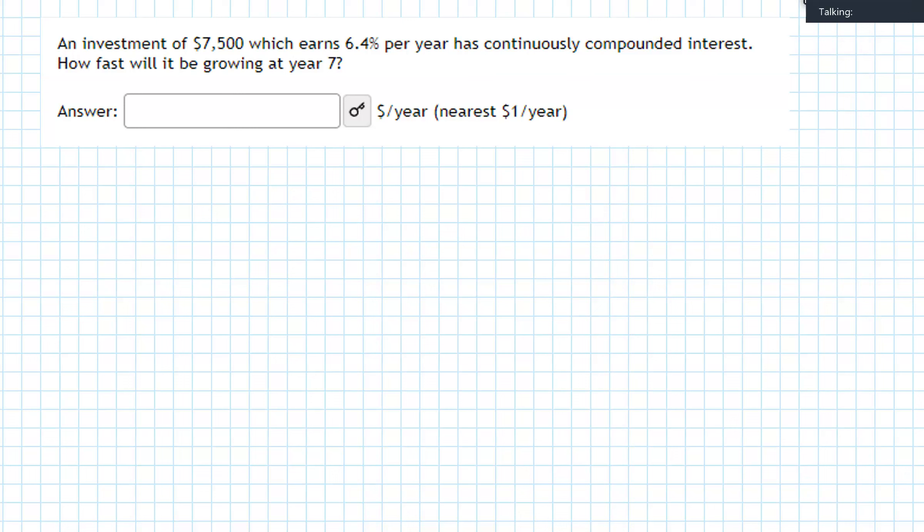An investment of $7,500 which earns 6.4% per year has continuously compounded interest. How fast will it be growing at year 7?